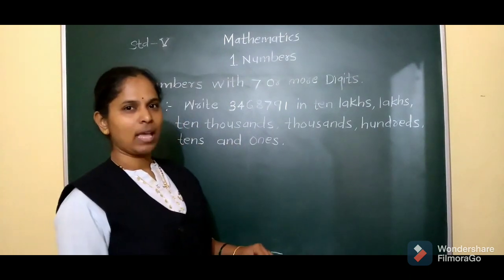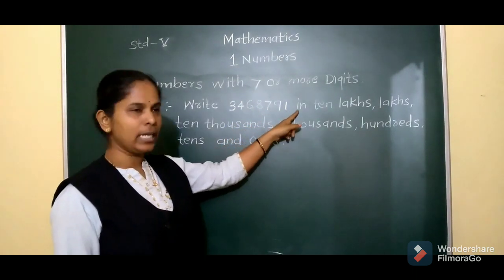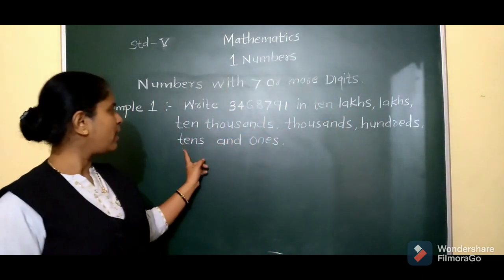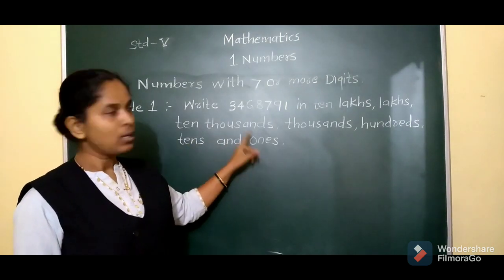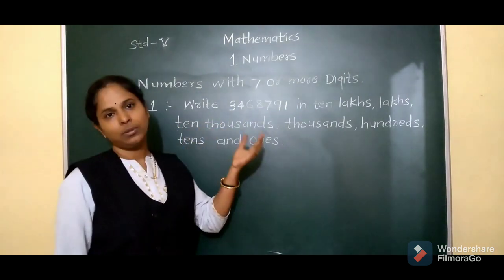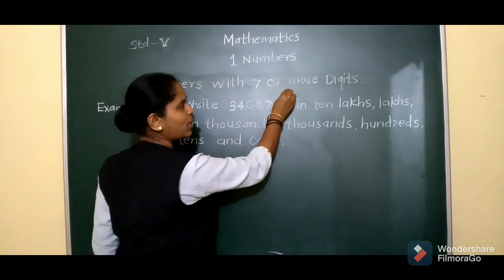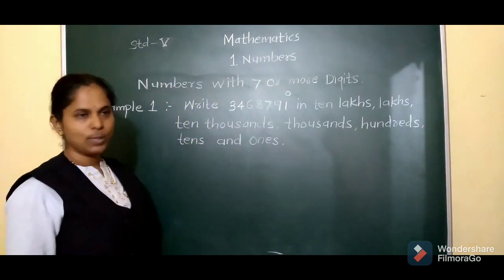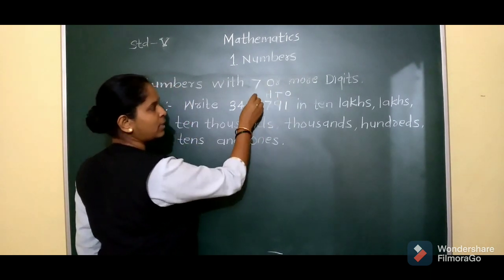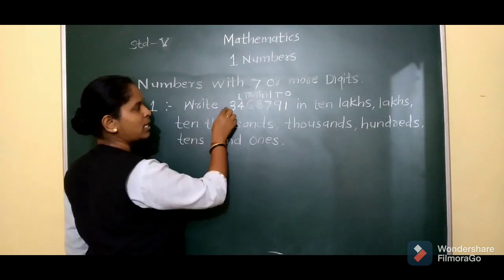Let us see one example. Write 34,68,791 in 10 lakhs, lakhs, 10,000, thousands, hundreds, tens, and ones. For that, we have to know the places. 1 is at the 1's place, 9 is at the 10's place, 7 is at the 100's place, 8 is at the 1000's place, 6 is at the 10,000's place, 4 is at the lakhs place.